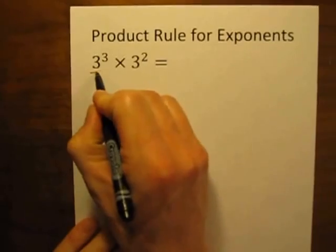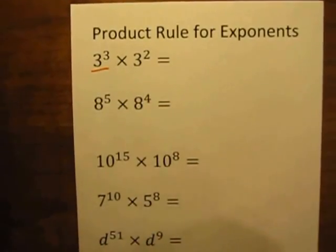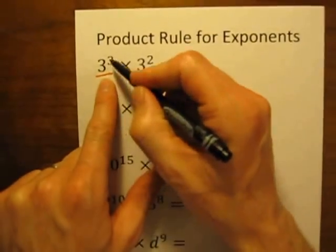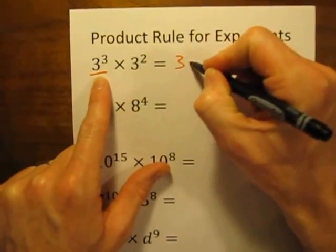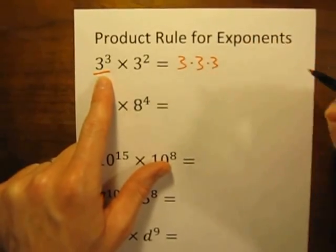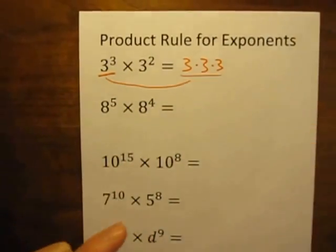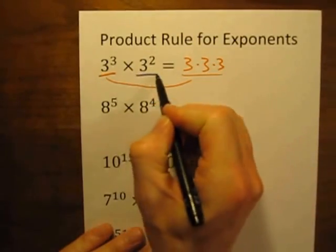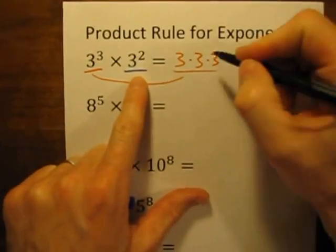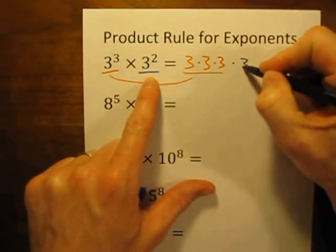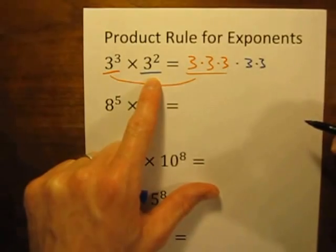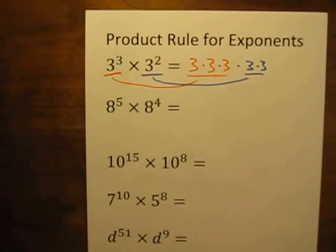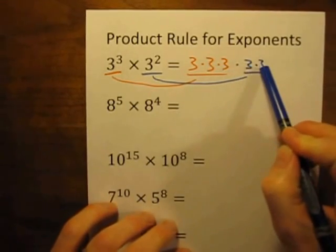I'd like to begin by taking each of these numbers and writing them in expanded form. In expanded form, we're going to take this 3 to the 3rd power and write that as 3 times 3 times 3. Next, I'm going to take this 3 to the 2nd power, or 3 squared, and write that in expanded form as times 3 times 3. Now what we have is 3 times 3 times 3 times 3 times 3.